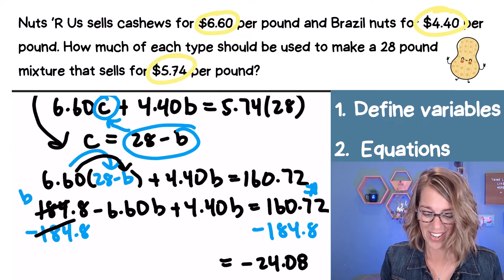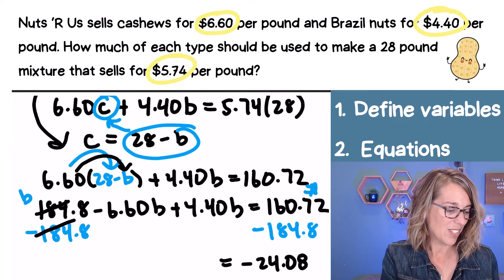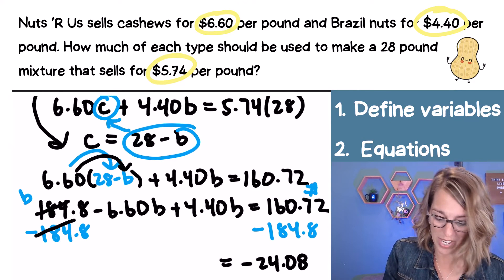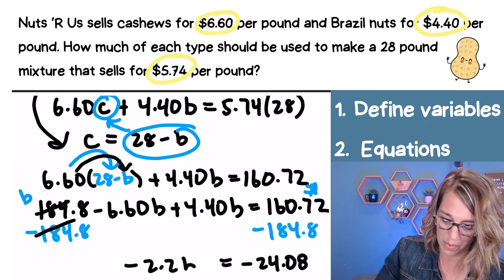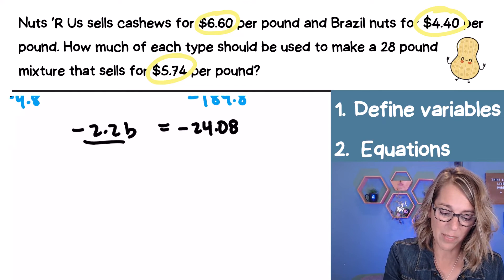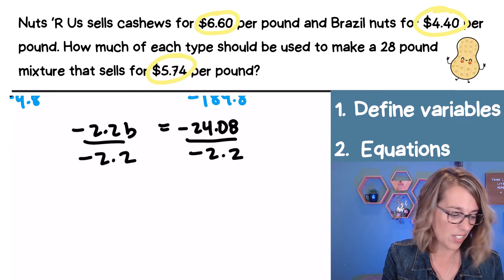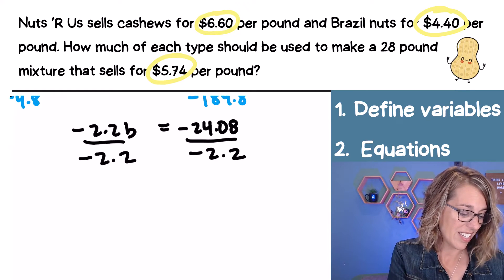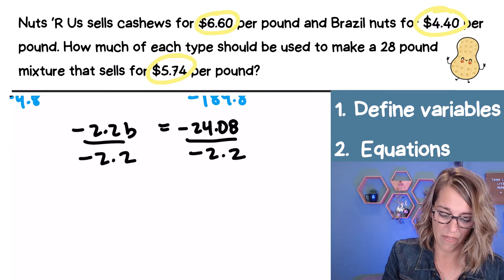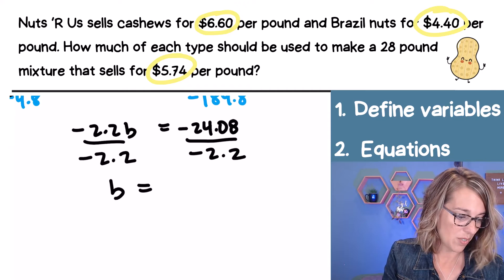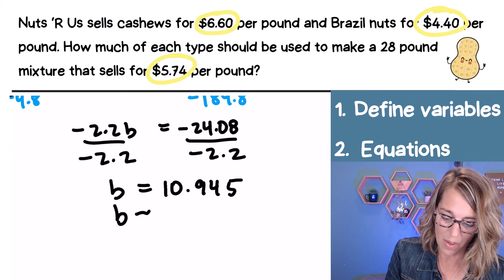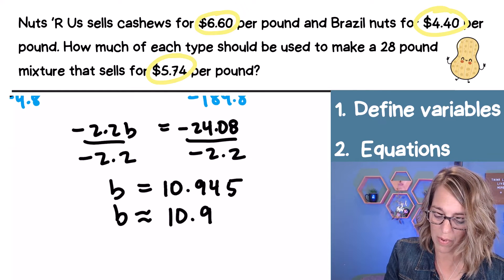These cancel. And then I've got negative 660 plus 440. So negative 6.6 plus 4.4 in my calculator. And I get negative 2.2 in front of that B. Negative 2.2B. I'm almost there. I just want B by itself. I need to divide both sides by that negative 2.2. So I want that negative 24.08 divided by negative 2.2. And I get 10.945. So B is approximately 10.945. So we could round that up just depending on how they wanted it rounded. I can say approximately 10.9. Remember these are pounds.